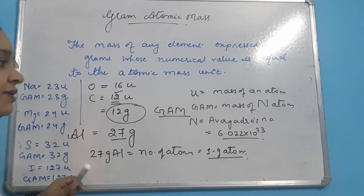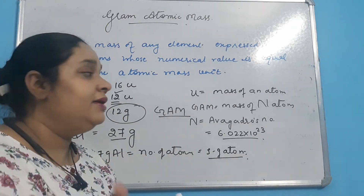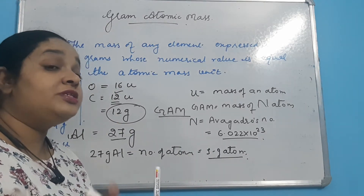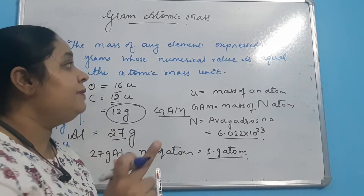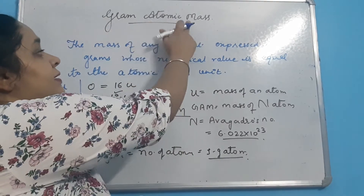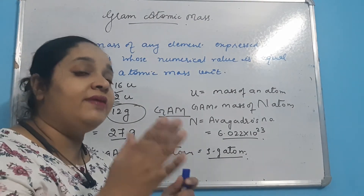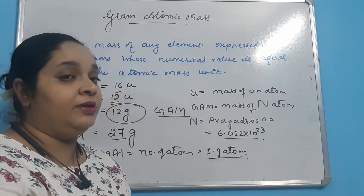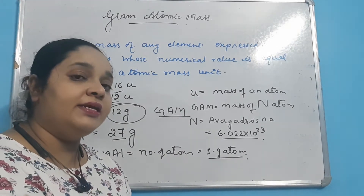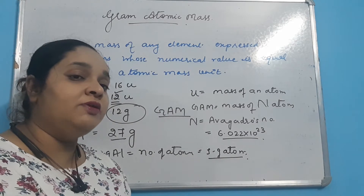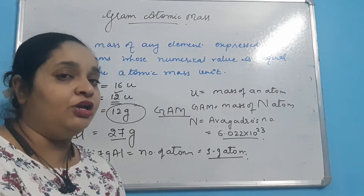Sulfur ka 32U, so sulfur ka gram atomic mass hoga 32 grams. Iodine ka 127U, so iodine ka gram atomic mass hoga 127 grams. To kisibhi element ke atomic mass ko jab unified mass ke place par hum gram mein use karte hain — uska itna weight lete hain ki uski numerical value unified mass ke barabar hi ho — use hum gram atomic mass kehte hain. That is known as gram atomic mass.